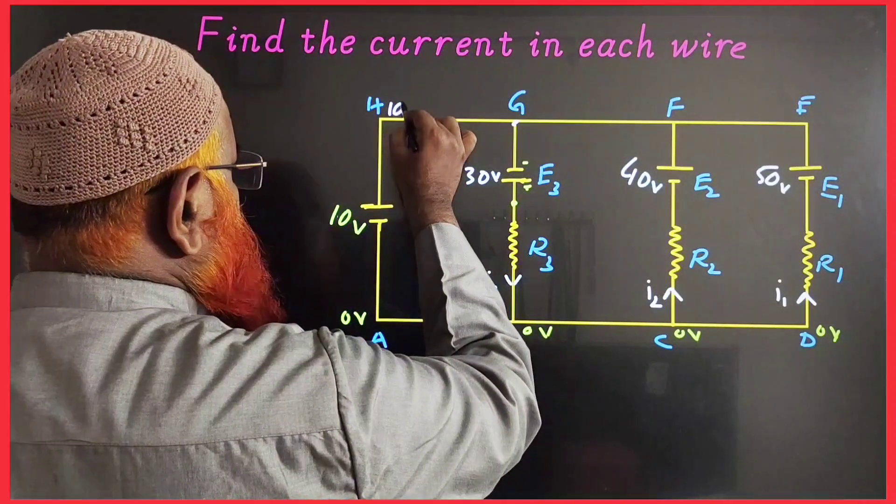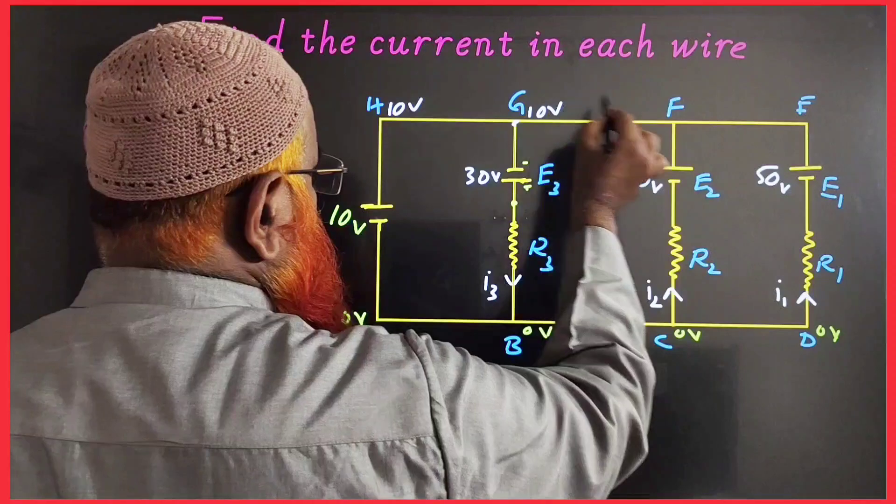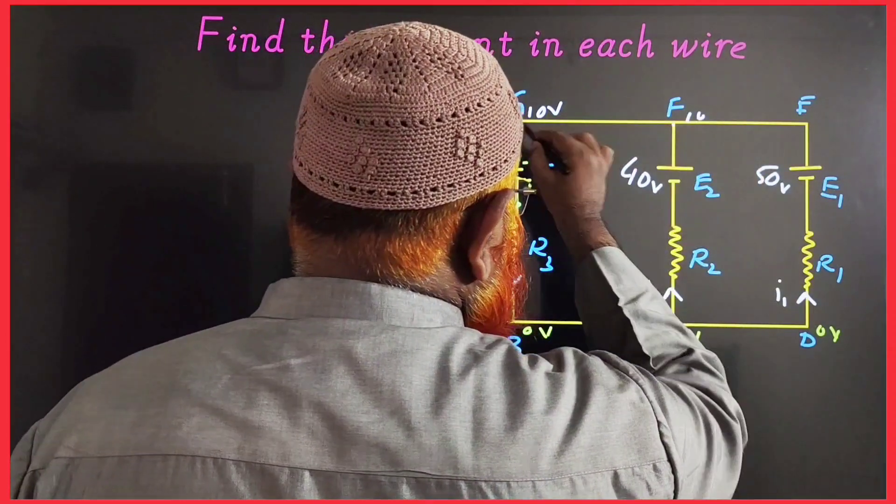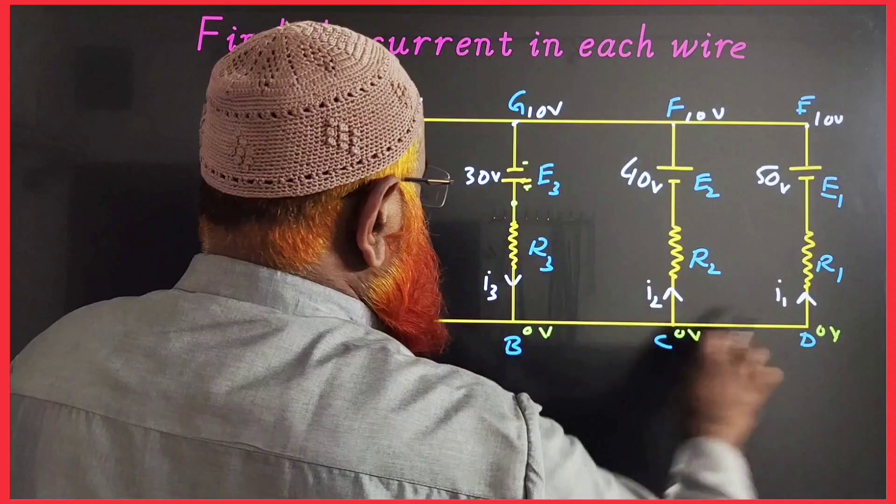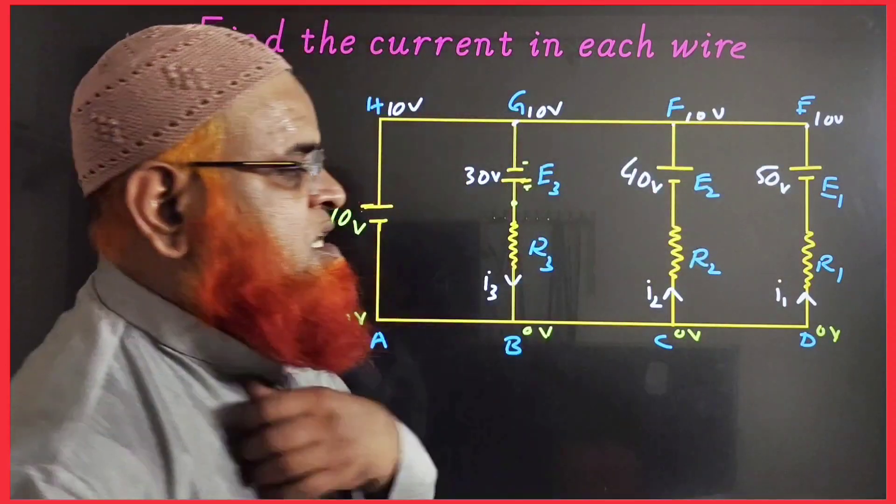From here to here it is 10 volts at this place. Here also 10 volts, here also this point has 10 volts, and here also 10 volts. So these are all 0 nodes and these are all having 10 volts.